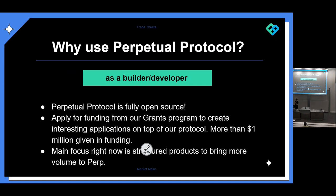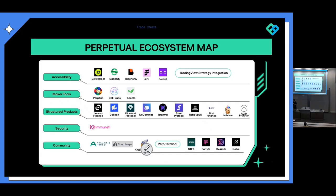Our ecosystem map shows all of our partners, grant recipients, broken down by different areas: accessibility, maker tools, structured products, security, and community.